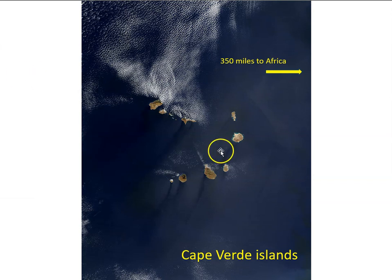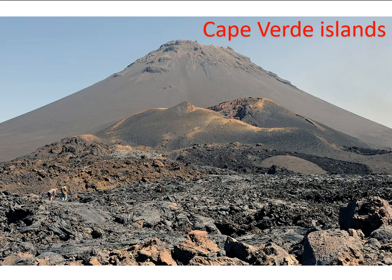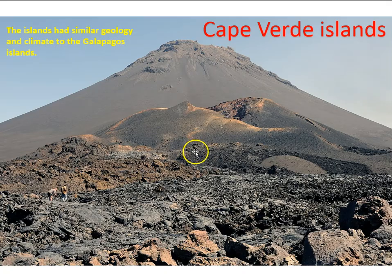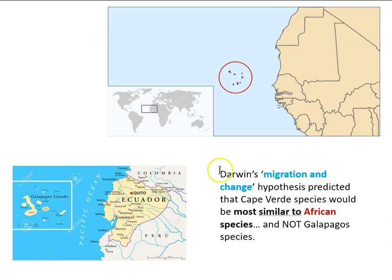The Cape Verde Islands, like the Galapagos, are the tops of volcanic mountains far from the mainland and were never connected to the African continent. The islands have a similar geology to the Galapagos and also host various plants and animals. Darwin's migration and change hypothesis predicted that Cape Verde species would be most similar to African species, not Galapagos species — since African species would have colonized them and changed. He was now in a position to compare Cape Verde species to both African and Galapagos species.